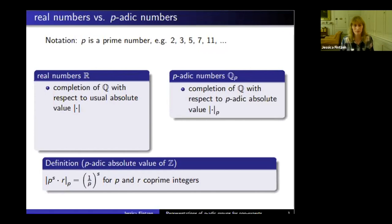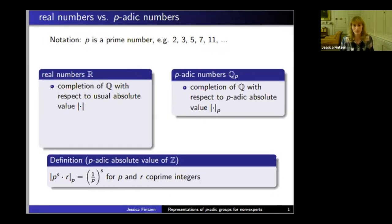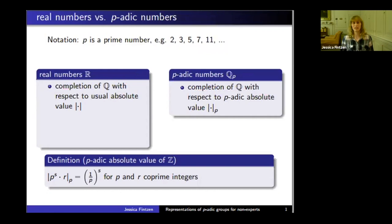The p-adic absolute value of an integer p to the s times r, where p and r are coprime, is 1 over p to the s. It measures how often an integer is divisible by p. The more often it's divisible by p, the smaller the p-adic absolute value.